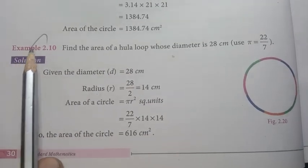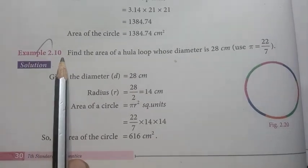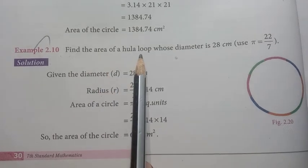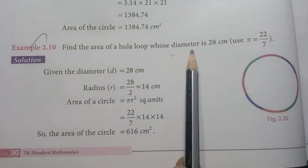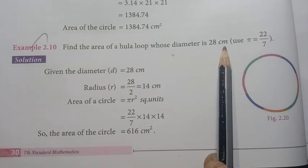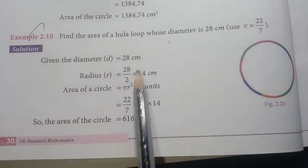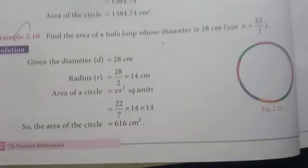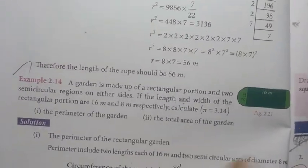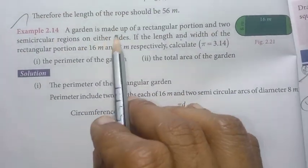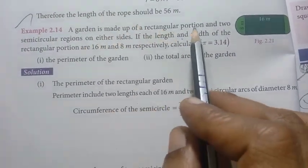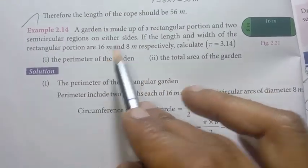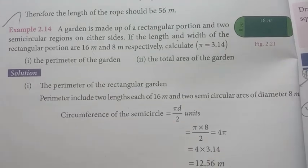Page number 30, Example 2.10: find the area of a hula loop whose diameter is 28 centimetres — that is an important question. Example 2.14: a garden is made up of a rectangular portion — Example 2.14 is important.